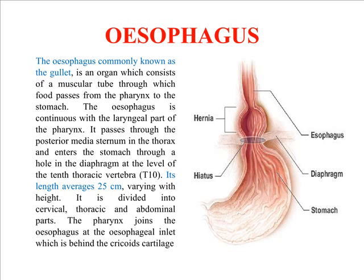The laryngopharynx connects to the esophagus and serves as a passage for both air and food. The next part of the digestive system is the esophagus. The esophagus is one of the most important parts, as it allows food to propel down from the oral cavity to the beginning of the stomach. It is a passage from the mouth to the first part of the stomach, allowing food particles to pass down into the stomach cavity.